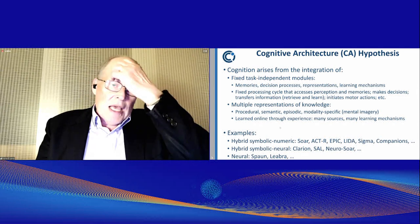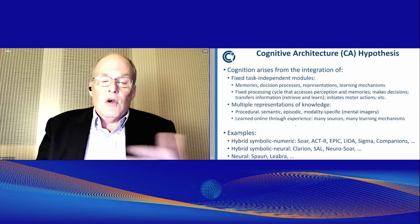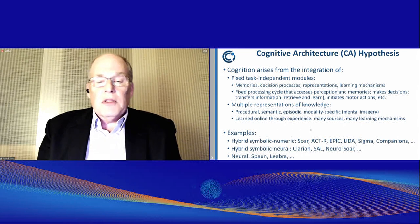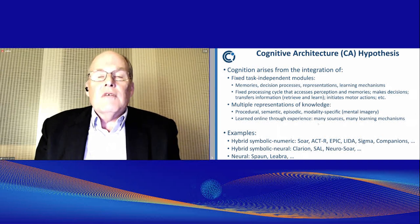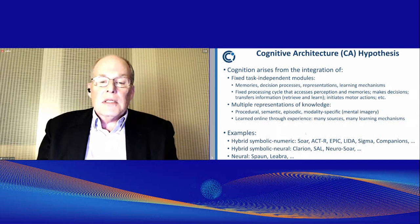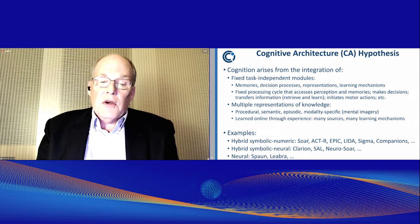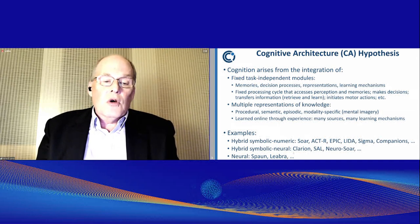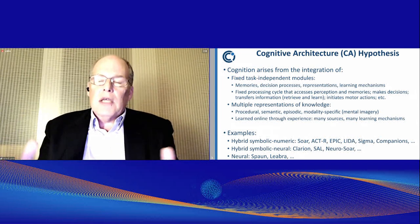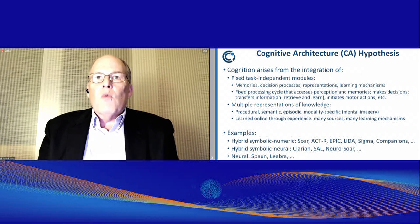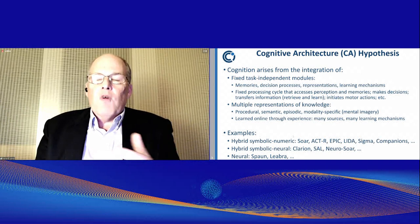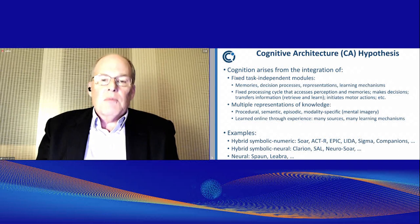Some examples of cognitive architectures: the one I've been working on is SOAR, but there's also ACT-R, EPIC, LIDA, Sigma, and Companion. These are combinations of symbolic and numeric processing. There are also some that combine symbolic and neural processing — Clarion, SALE, and Neurosoar — and there are more purely neural cognitive architectures. What distinguishes these is they try to be more complete than typical neural systems like feed-forward networks. Spawn and Libra are two that come to mind.